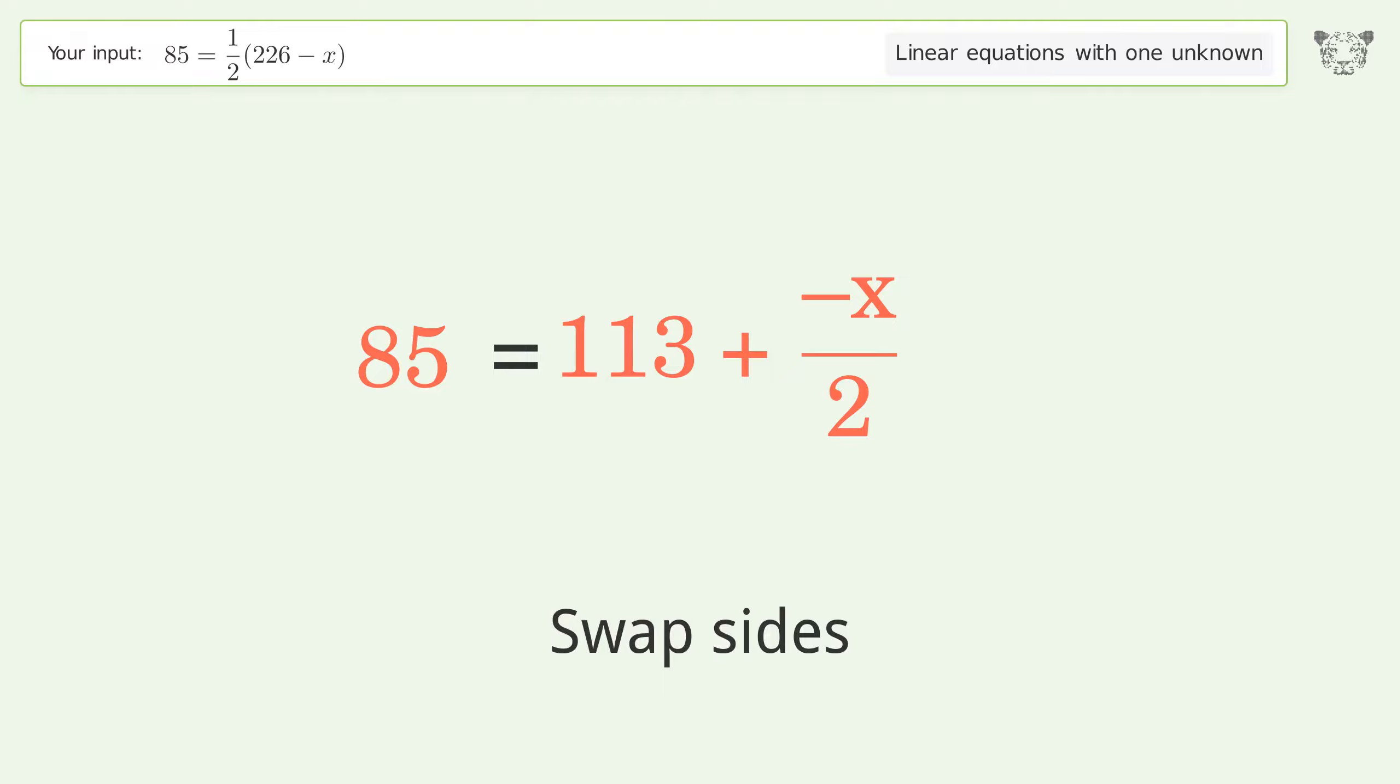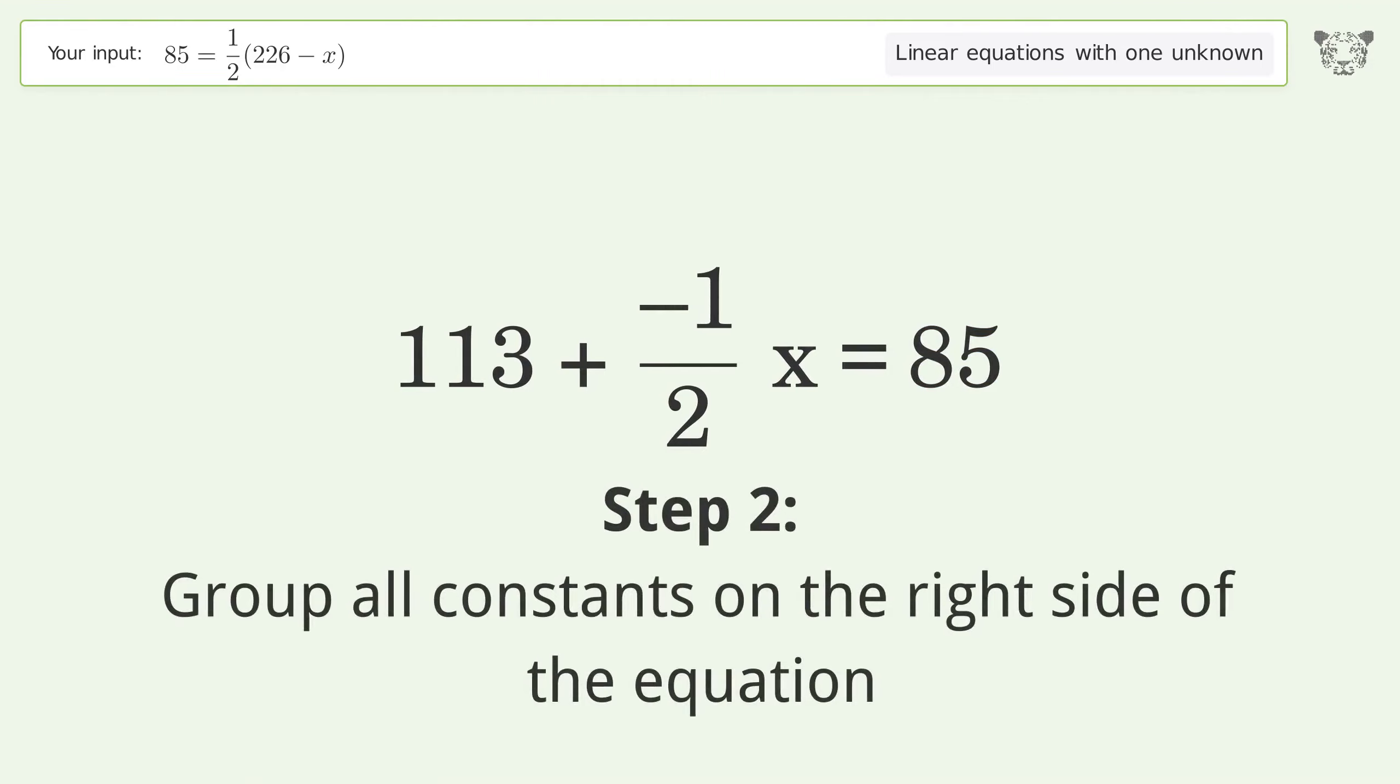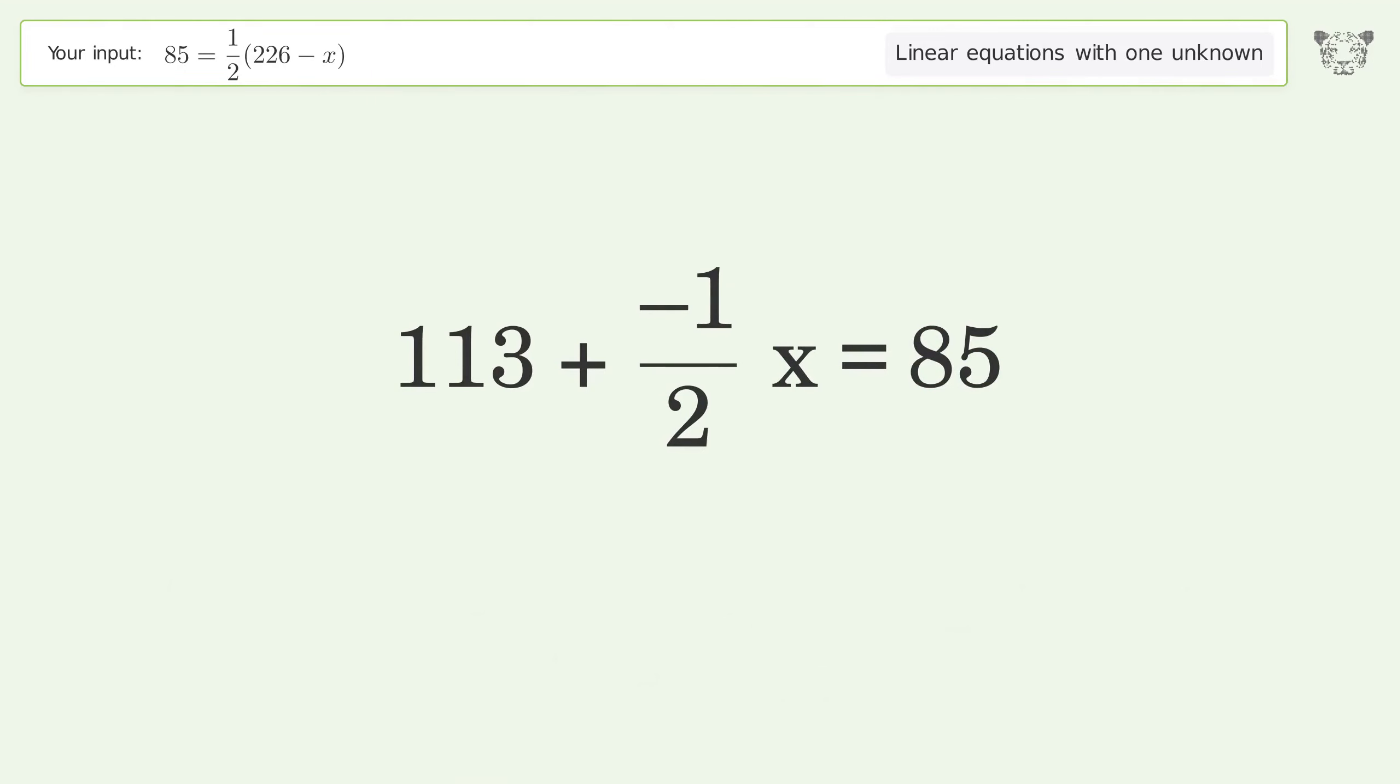Swap sides. Group all constants on the right side of the equation. Subtract 113 from both sides.